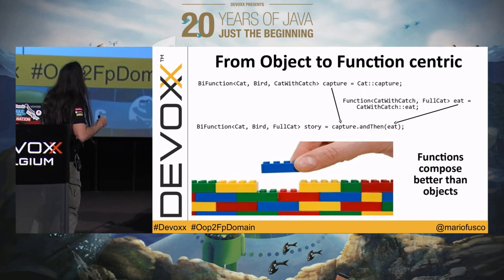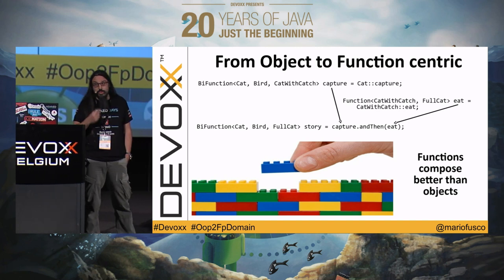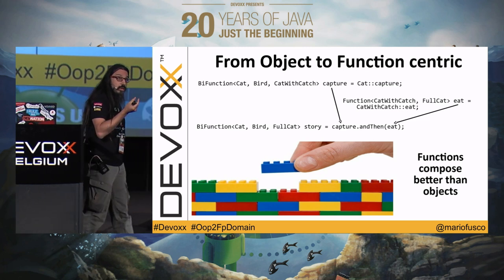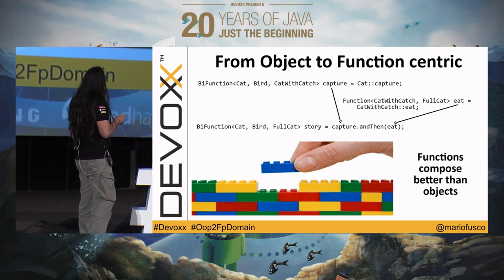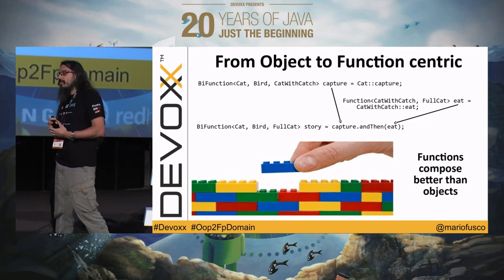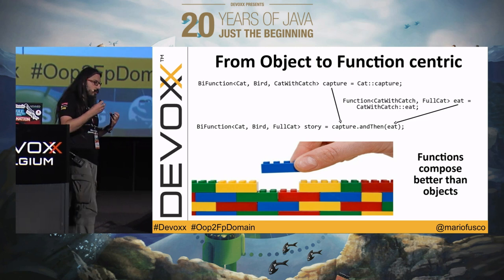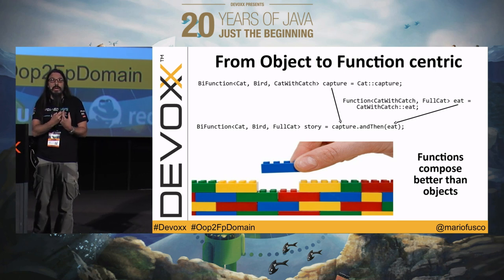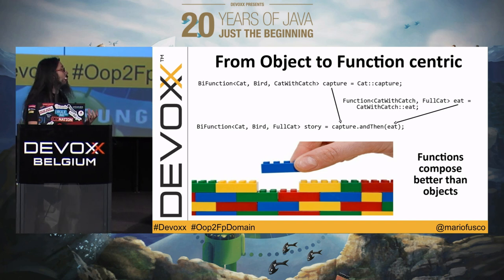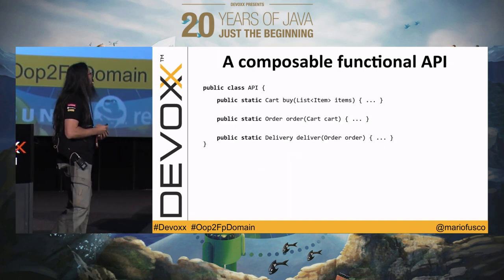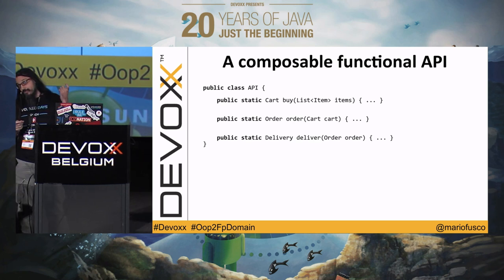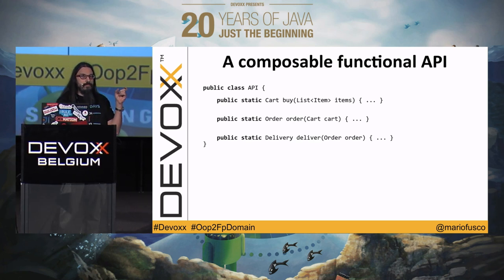The idea is to move from an object-centric world to a function-centric world. I have these building blocks — the sub-stories — and I'm just composing them. This is very typical in functional programming: we have very small functions, as small as possible, because in doing so they are more reusable and more general. With this idea in mind, we can design our API so that each method or function does a very simple job.